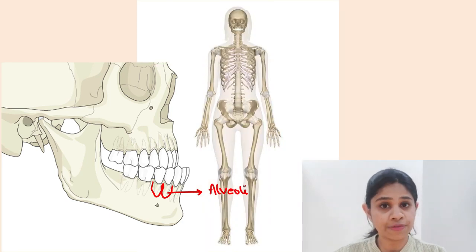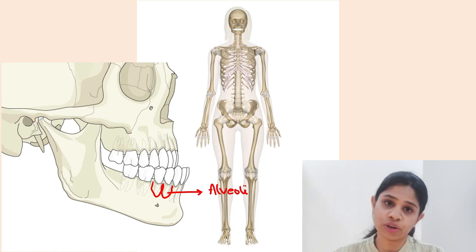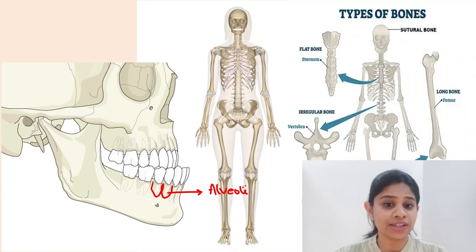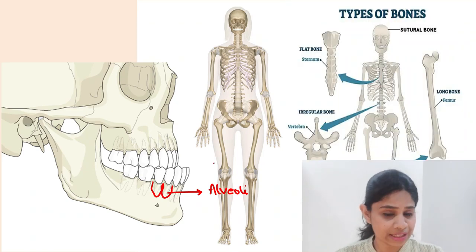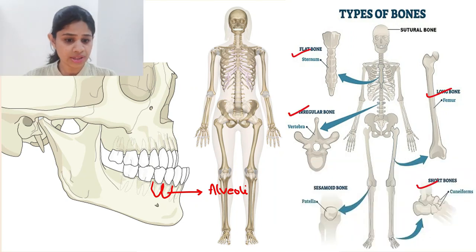Basically, bone is a form of connective tissue and it forms the structural element of any human skeletal system. If we talk about the different types of bones which are present, structurally we have various types such as flat bones, irregular bones, long bones, short bones, and sesamoid bones.